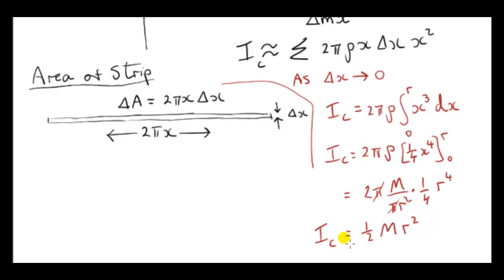So there we have it: the moment of inertia of a uniform disk of mass m and radius r about an axis through the center of mass and perpendicular to the plane of the disk.